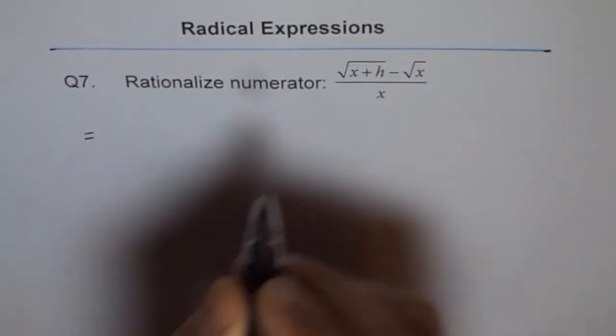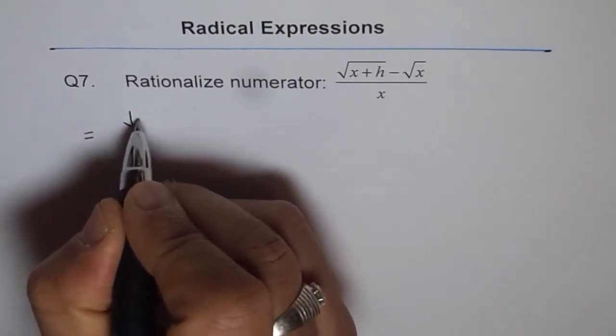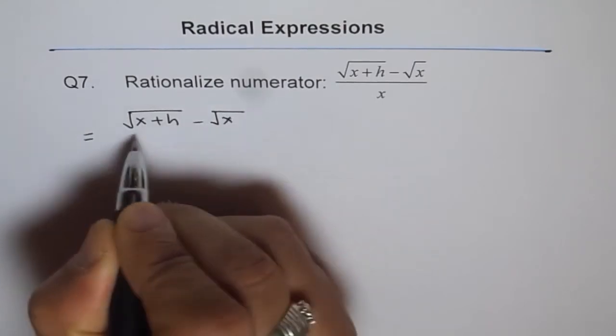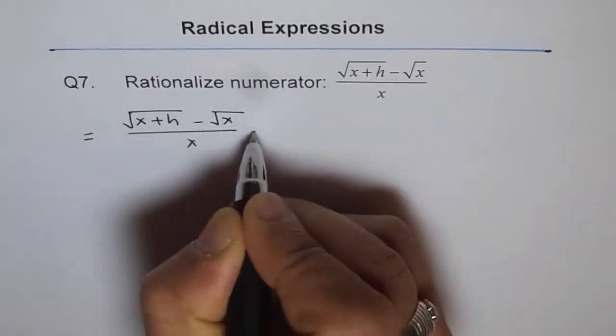So this expression is equal to square root of x plus h minus square root of x over x times...